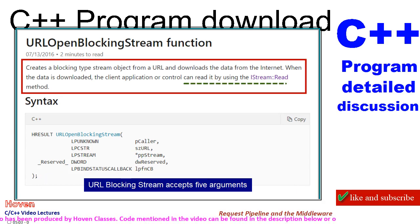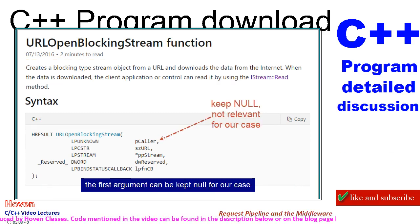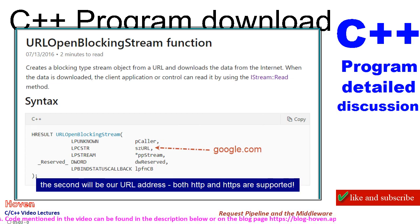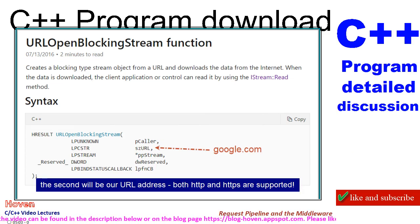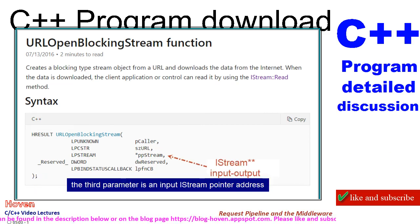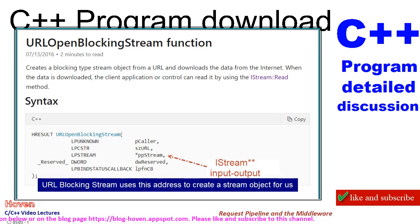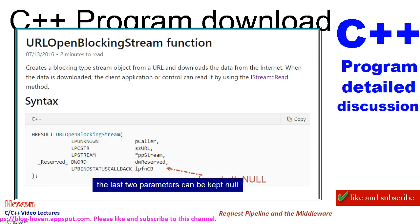URLOpenBlockingStream accepts five arguments. The first argument can be kept null for our case. The second will be our URL address. Both HTTP and HTTPS are supported. The third parameter is an input IStream pointer address, which URLOpenBlockingStream uses to create a stream object for us. The last two parameters can be kept null.